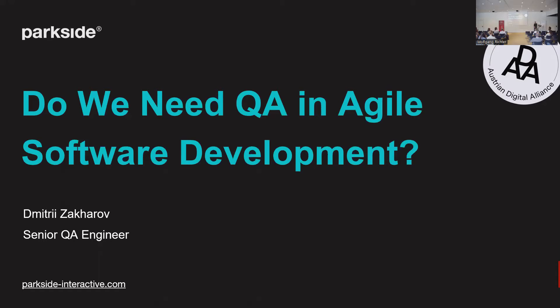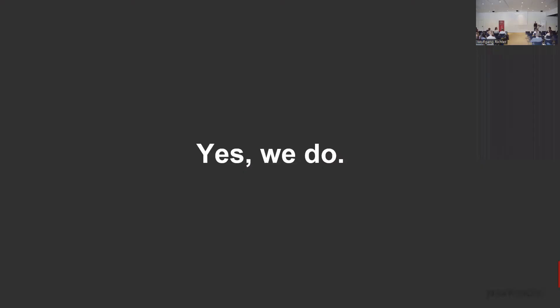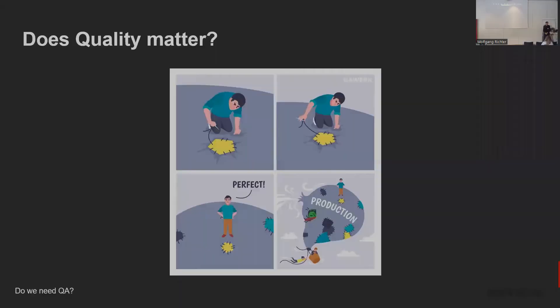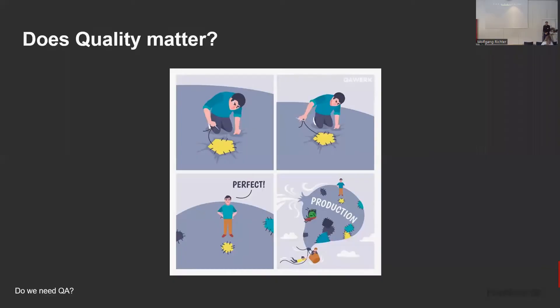I'd like to talk about the question: do we need QA in agile software development? And the answer is pretty obvious — yes, of course we need it. And what else would you expect to hear from a QA engineer, right? But now seriously, is quality important today? Or does agile mean that we need to be fast with software development, reduce time to market, and there is no time for high quality, and we just need to accept that?